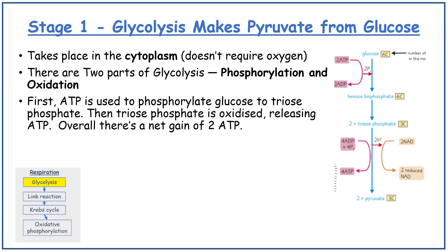Glycolysis doesn't require oxygen and has two parts: phosphorylation and oxidation. First, two ATP are used to phosphorylate the glucose into hexose phosphate and then triose phosphate. The triose phosphate is then oxidised, releasing ATP. Overall, there is a net gain of two ATP.